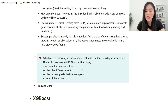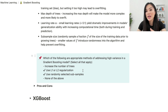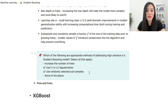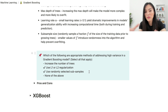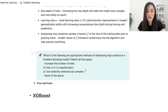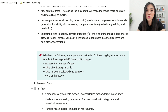Using L1 or L2 regularization will help prevent overfitting because adding a regularization term is essentially adding a penalty term to the loss function. Using randomly selected subsamples also helps, since introducing randomness into the algorithm prevents overfitting. So the correct answers are: use L1 or L2 regularization, and use randomly selected subsamples.